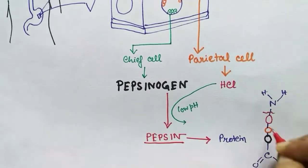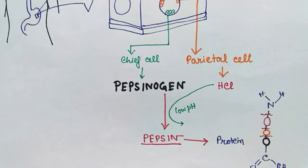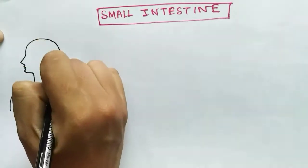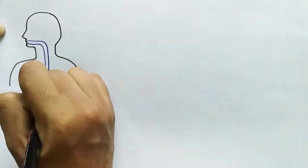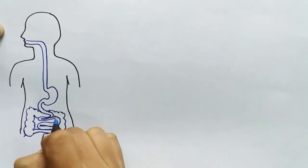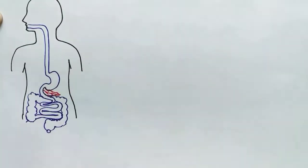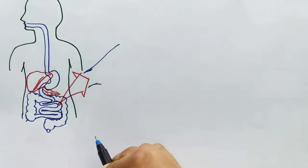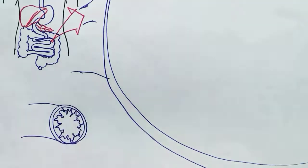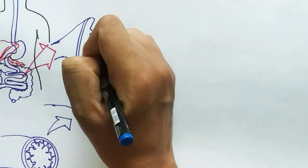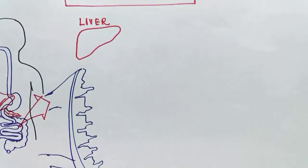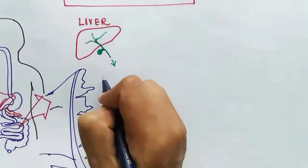Pepsin is the active enzyme which acts on protein and breaks down the protein into amino acids. After the stomach comes the small intestine. The bolus in the stomach converts into chyme and enters the small intestine. The small intestine is a pipe-like structure which starts just after the stomach and connects to the large intestine at the end. The inner wall of the small intestine has some invaginations and finger-like projections called villi. Two major glands pour their secretions into the small intestine: the pancreas and the liver.